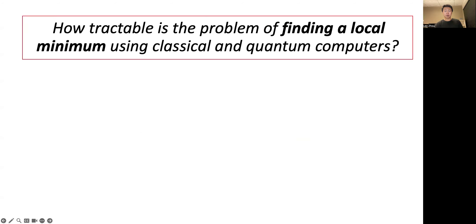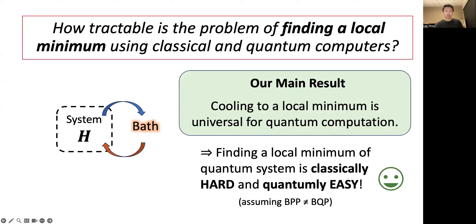Motivated by this perspective, we ask: how tractable is the problem of finding a local minimum of quantum systems using classical and quantum computers? We address this question by proving that a machine that cools a physical system to a local minimum is a universal quantum computer. Therefore, under the standard assumption that quantum computers cannot be efficiently classically simulated, finding a local minimum is classically hard and quantumly easy.